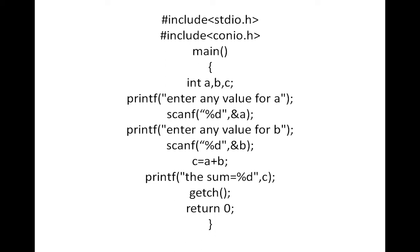And then return 0. This is the complete program to add two numbers. If you run this program, it will prompt you to enter a value for a and a value for b, and then it will display the sum of the two numbers. This covers the basic things I have explained: int, #include stdio.h, and the main function.